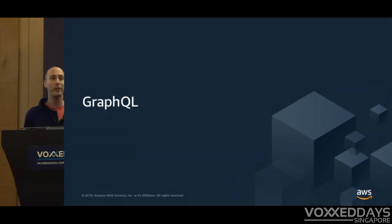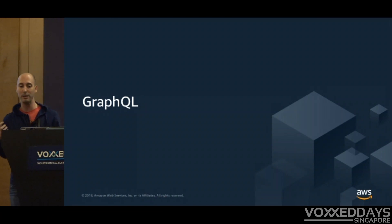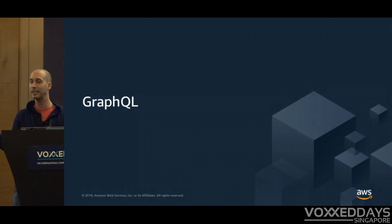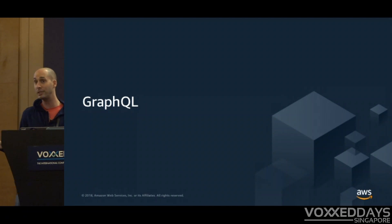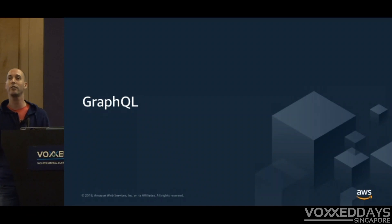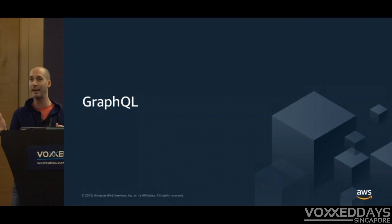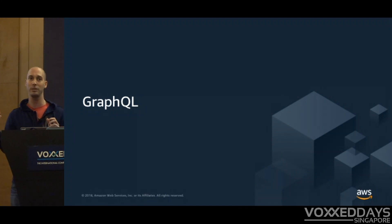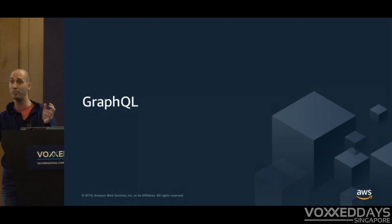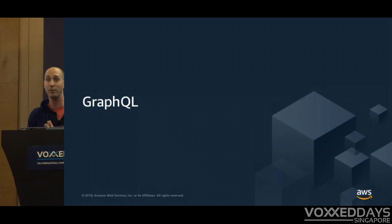GraphQL is a query language for your API, fulfilled by a compatible service on the backend that knows how to take the queries the client is asking for and respond with the appropriate data. There's no specific language or technology needed for GraphQL — it's just a spec. It says here's how you should define your schemas, this is how the client should ask for data from the backend, and your backend should respond to data requests or mutations in this fashion. It's just a spec that you can implement in any language with the technologies of your choice.